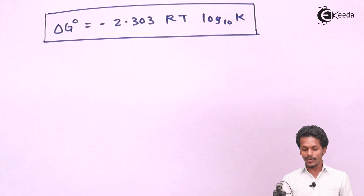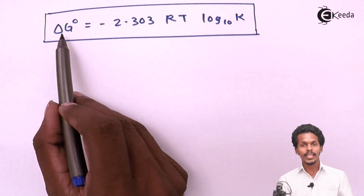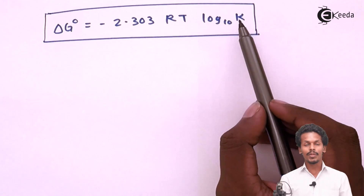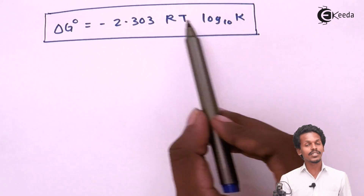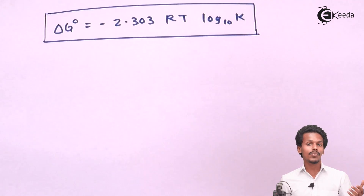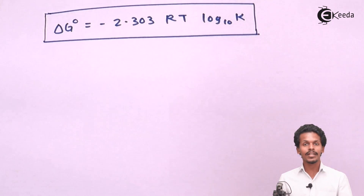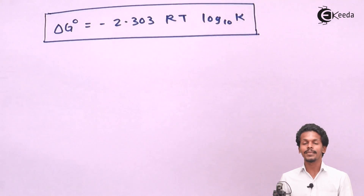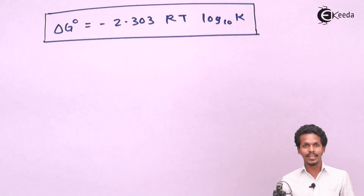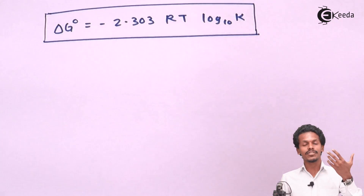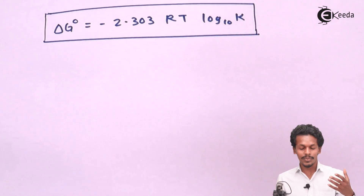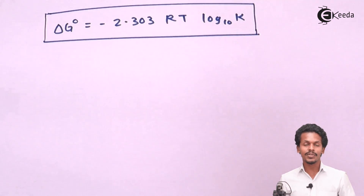This is the relationship between standard Gibbs free energy change and equilibrium constant, and this relation holds at equilibrium. If the reaction is not at equilibrium, the relationship is: ΔG = ΔG° + 2.303 RT log Q, where Q is the reaction quotient expressed either in concentrations (Qc) or partial pressures (Qp).